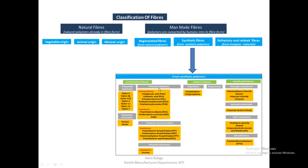Under semi-aromatic polyesters from co-polymers, there is polyethylene terephthalate — commonly known as polyester or PET. Whenever we say polyester, it typically means PET. Other types include polybutylene terephthalate (PBT), polytrimethylene terephthalate (PTT), and polyethylene naphthalate (PEN). Under polyester aromatic, there is just one example: Vectran.